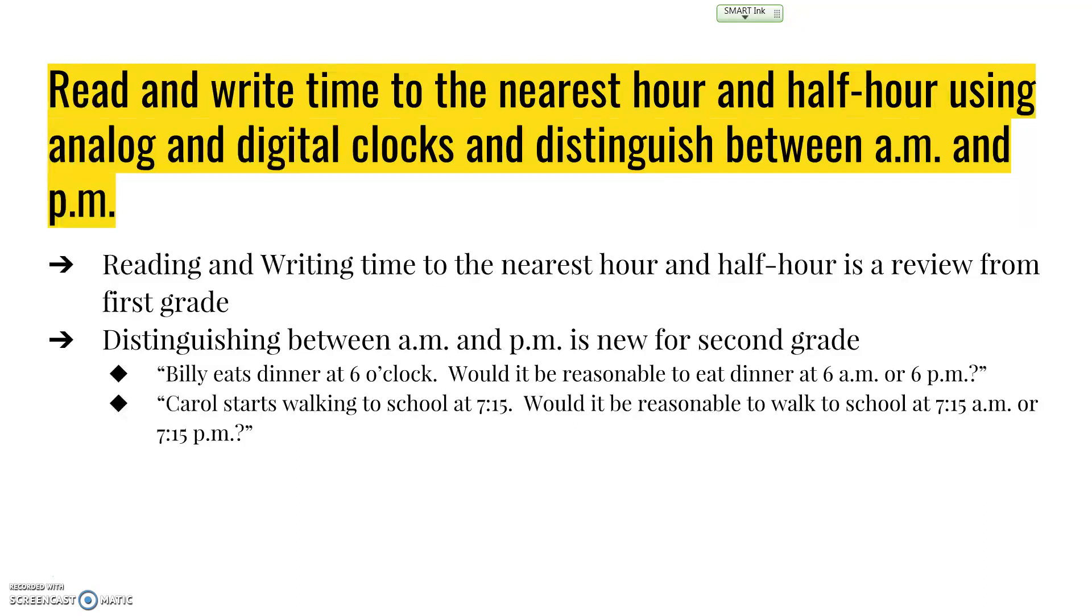By the end of second grade, they'll be telling time to the nearest minute. But we're going to build up to that. We'll start with the nearest hour and half hour, then go to the nearest 15 minutes, then five minutes, and eventually to the nearest minute. This is something second graders tend to have problems with, so we've broken it down into several smaller steps to help them reach the end goal.